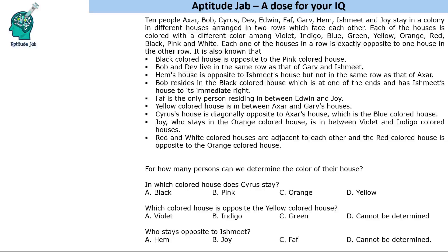Now, among the conditions given, the first is that Bob resides in the black coloured house which is at one of the ends, and has Ishmid's house to its immediate right. So Bob is on one end and Ishmid is to the right — Bob must be at the left end. Let us say this is Bob and this is Ishmid on his right, and Bob lives in the black house.